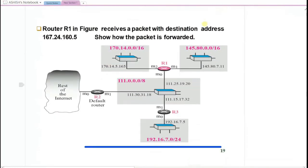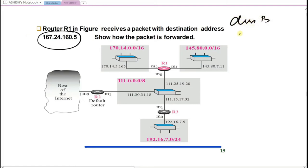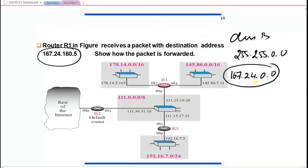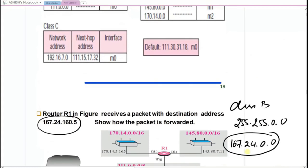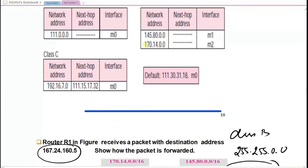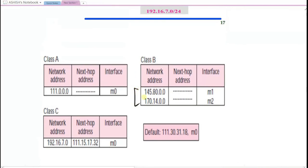For another example: destination address is class B. Apply mask 255.255.0.0 to get network address 167.24.0.0. Search in the class B table — this entry does not exist. So the router goes to the default entry and forwards through the default interface M0.